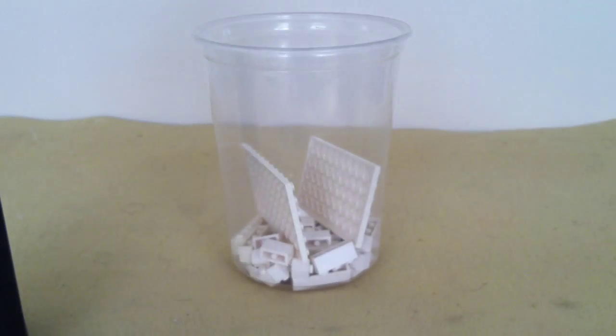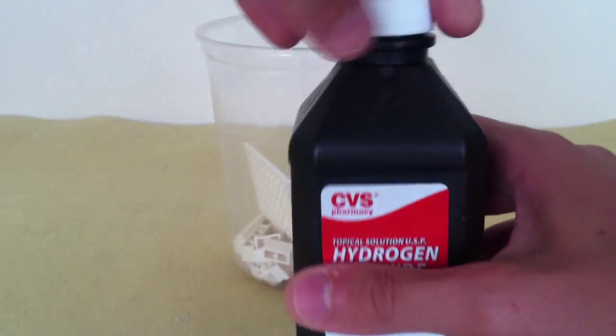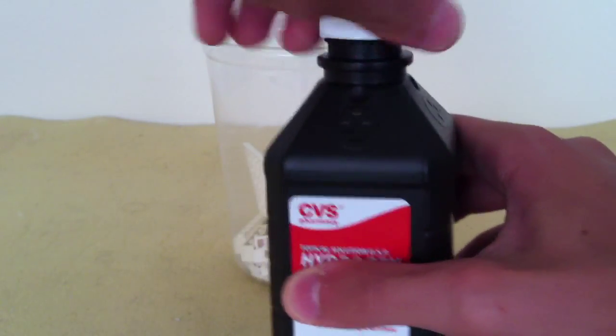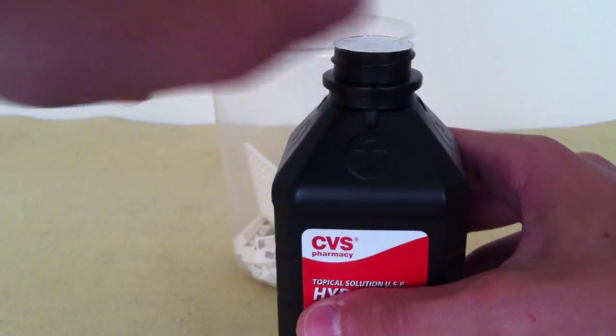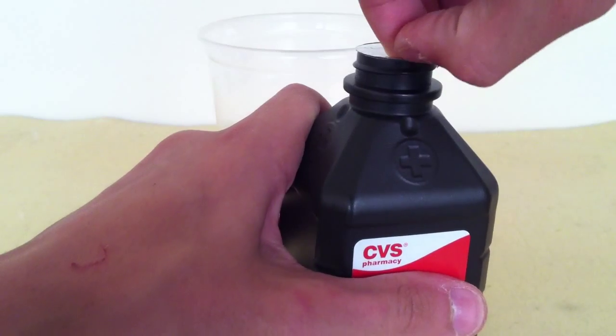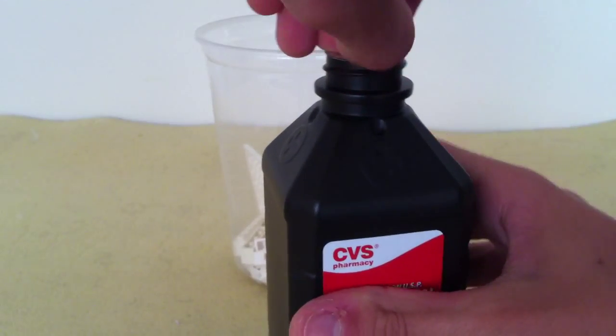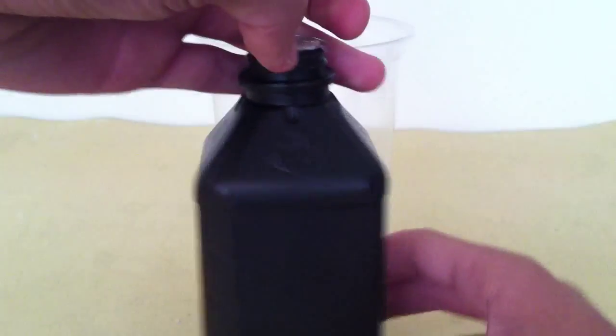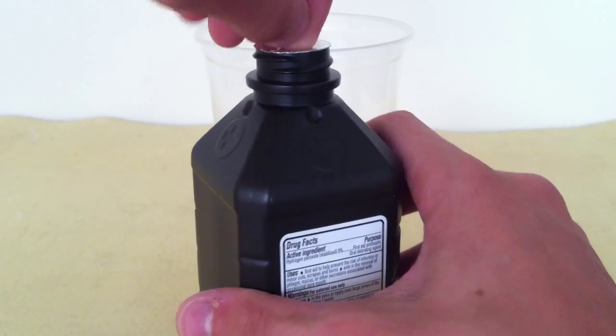Now the problem with this is that when you pour this in, Lego bricks float. Also you want to be very careful with hydrogen peroxide, it's some pretty nasty stuff. You don't want to get this in your eyes, you don't want to eat it, and if you put your hair in it your hair will turn white. Make sure you read all the safety crap back here so that you don't kill yourself.